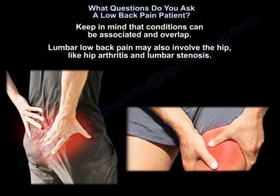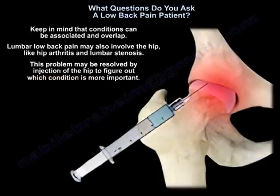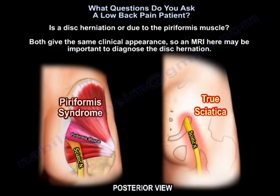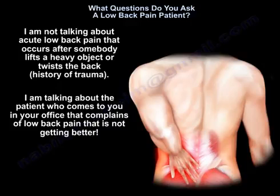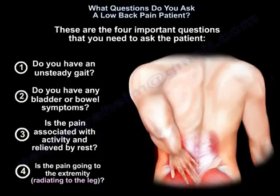Keep in mind that conditions can be associated and overlap. Low back pain may also involve the hip — for example, hip arthritis and lumbar stenosis can coexist, and this may be clarified by injecting the hip. Another consideration is whether the problem is a disc herniation or piriformis muscle syndrome, as both give the same clinical appearance; an MRI may be important here. Note that this discussion applies to patients presenting with persistent low back pain in the office, not acute trauma cases. Over 90% of patients with low back pain will get better between 6 to 8 weeks.